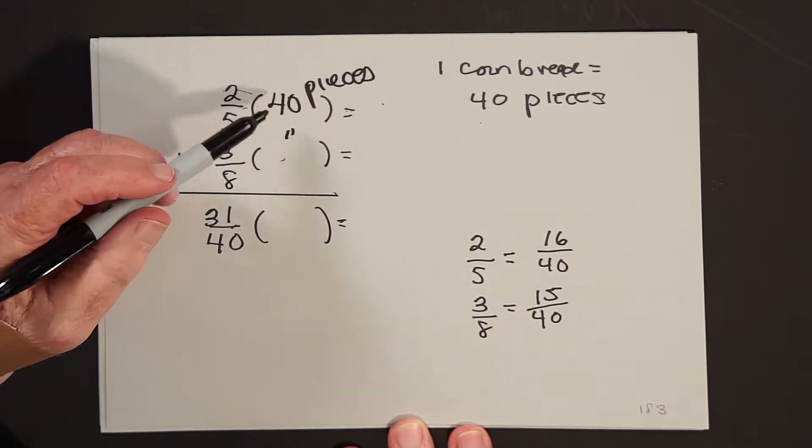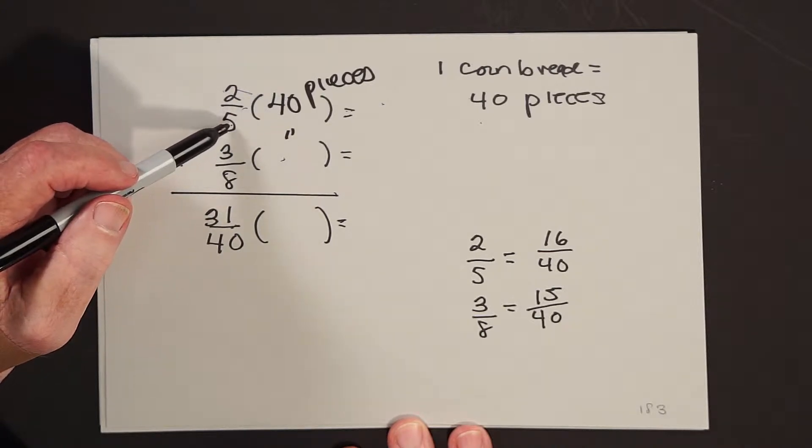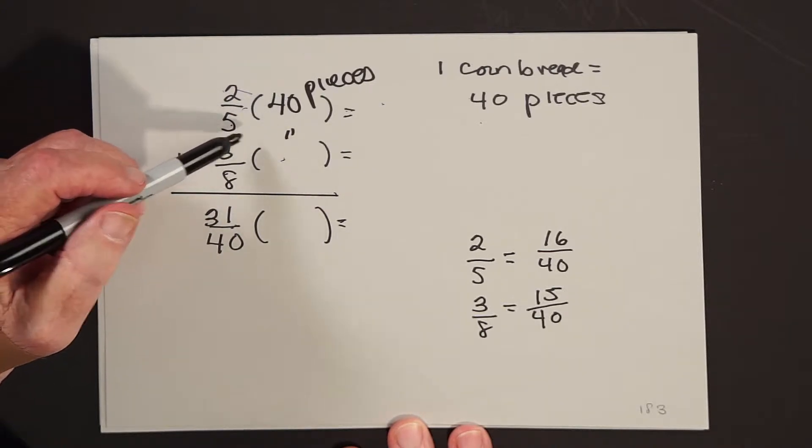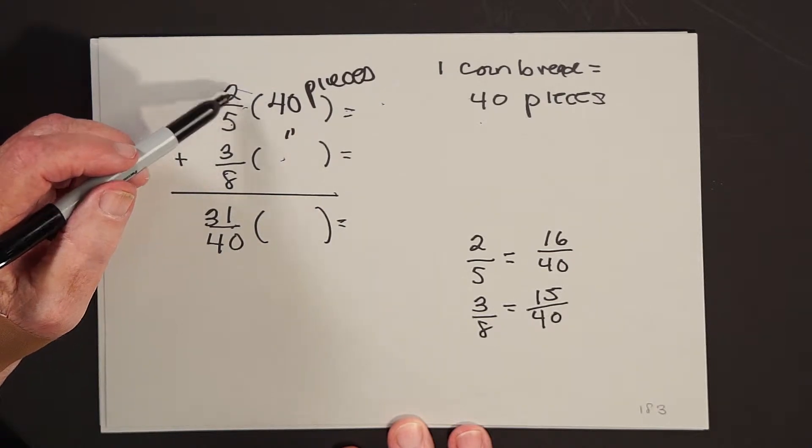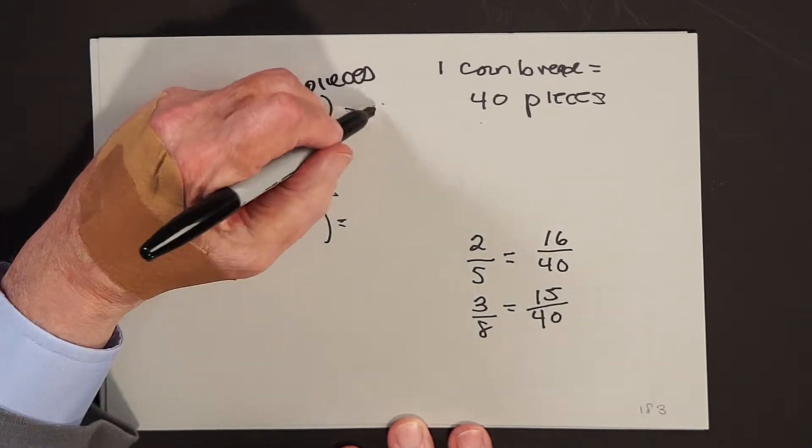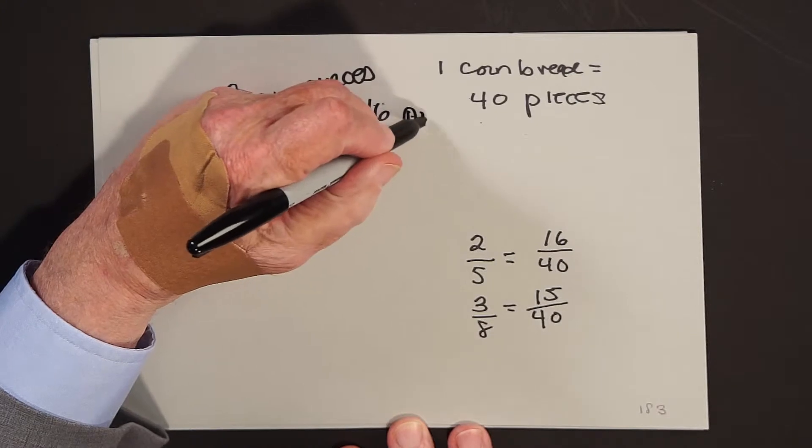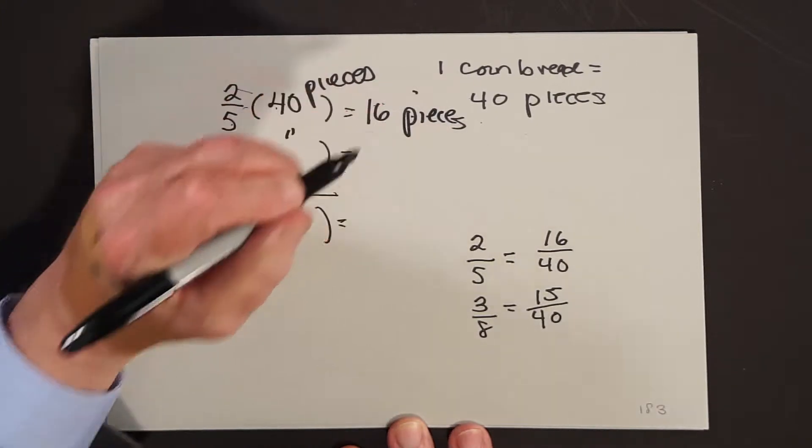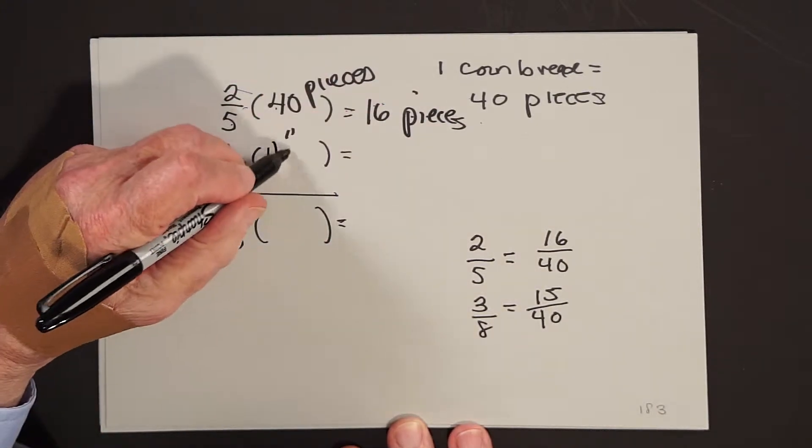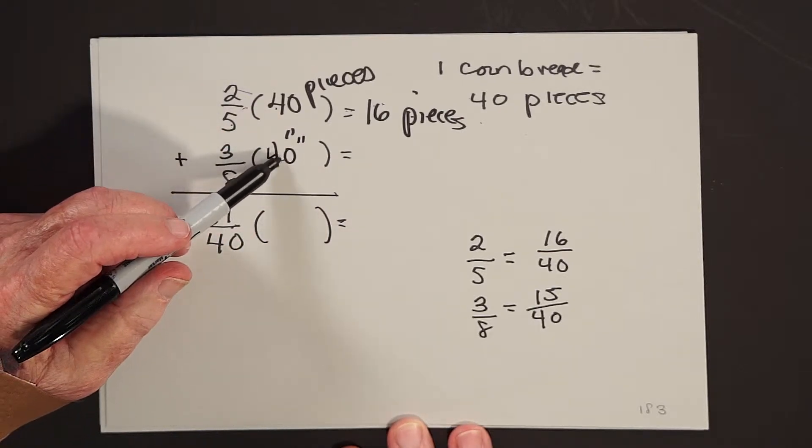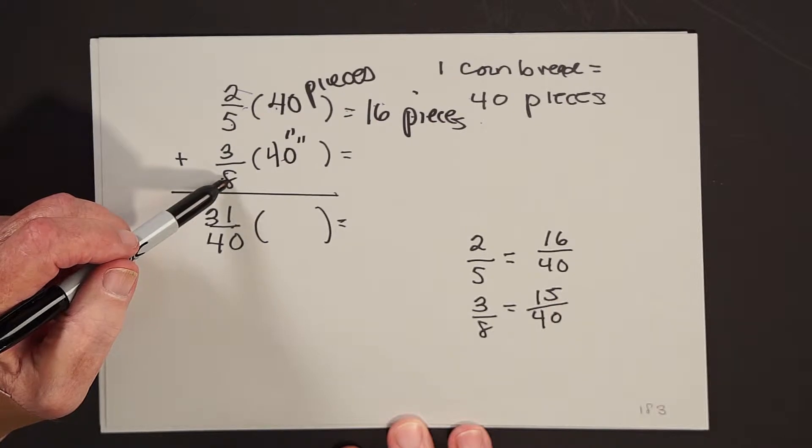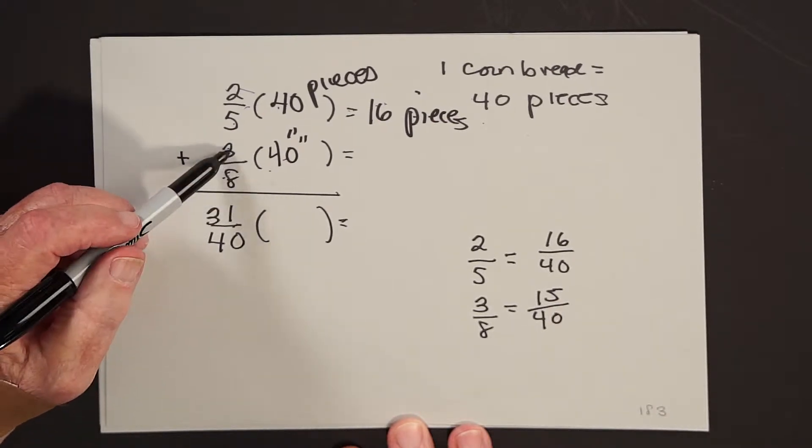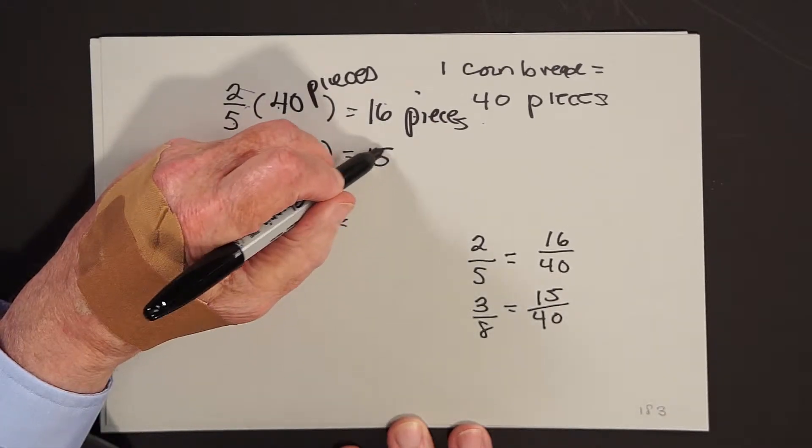Now what's two-fifths of forty? If you divide forty into five equal parts, each part is eight. See, five goes into forty eight times. You're taking two of those pieces, so you're taking eight twice. That's sixteen pieces. What's three-eighths of forty pieces? Well, you're dividing forty into eight equal parts. Forty divided by eight is five. You're taking three of those pieces. Three times five is fifteen.